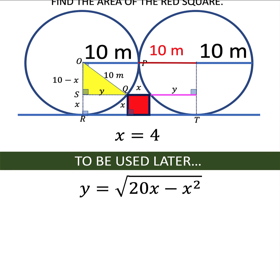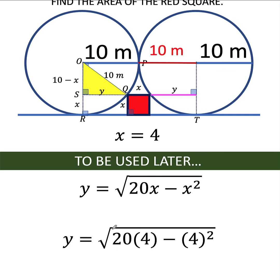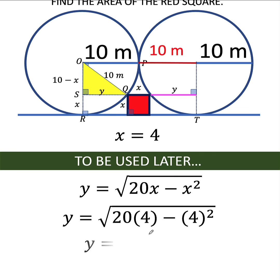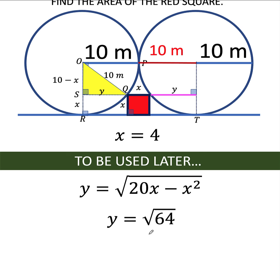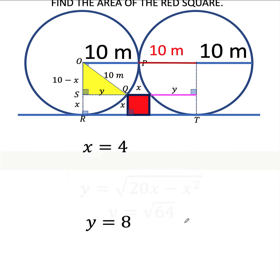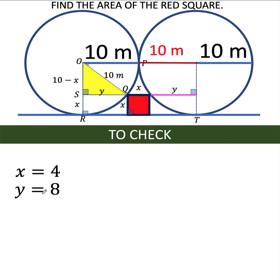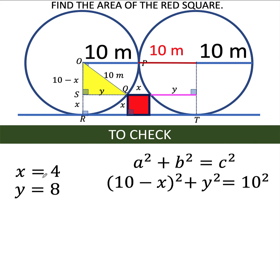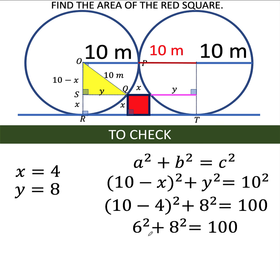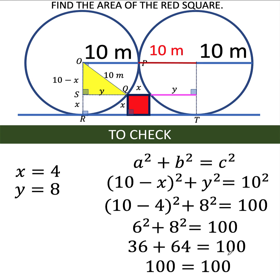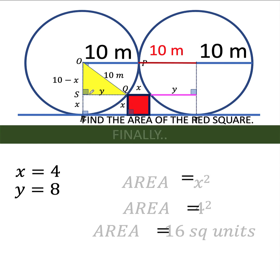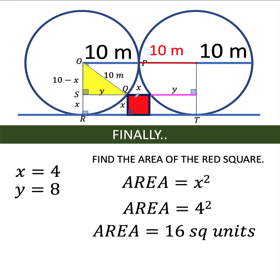So when x is equal to 4, substituting that value into the equation we set aside, we have y equals the square root of 20 times 4 minus 4 squared, which equals the square root of 64, so y equals 8. We can now find the area of this red square by squaring x. Let's verify: substituting 4 for x and 8 for y into the Pythagorean formula gives 6 squared plus 8 squared equals 100, which is 36 plus 64, which is indeed equal to 100. So it's verified that x equals 4 and y equals 8 are correct. Therefore, the area equals x squared equals 4 squared equals 16 square units. Thank you very much, and we hope to see you again on our next video. Bye for now.